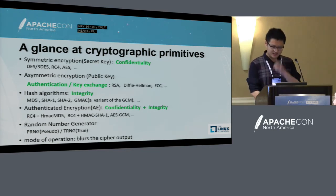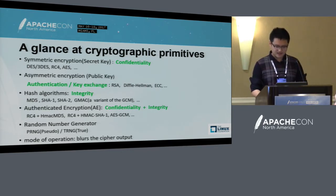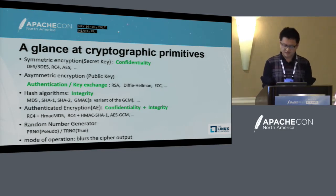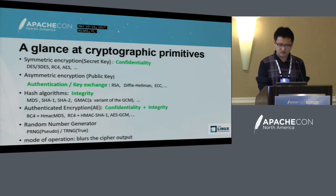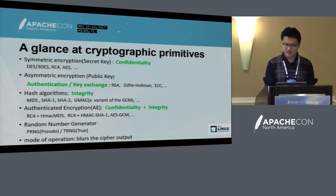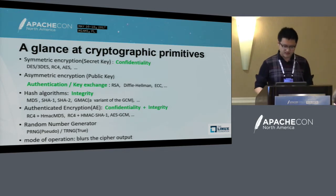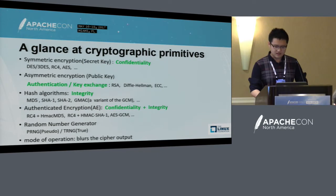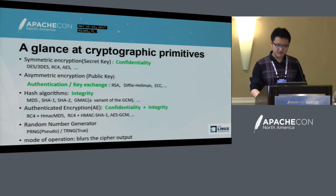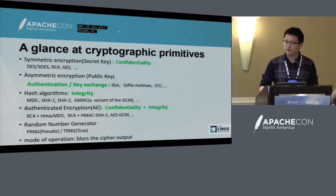Asymmetric encryption is used for authentication and key exchange, such as RSA, Diffie-Hellman, ECC, and so on. The HMAC algorithm is used to provide a digital fingerprint for message integrity. Authenticated encryption is a fundamental crypto primitive — it is a combination of confidentiality and integrity. There is also the random number generator, which is used to generate keys and IVs for cryptography. It has a pseudo random number generator and a true random number generator.